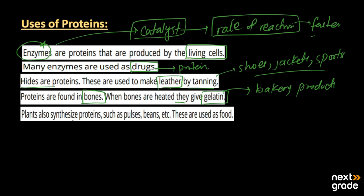Plants can also synthesize proteins, such as pulses and beans, which are sources of proteins. These pulses and beans are used as a food source, and in turn they provide proteins to the human body. This is helpful in strengthening and supporting the growth of muscles in human beings.